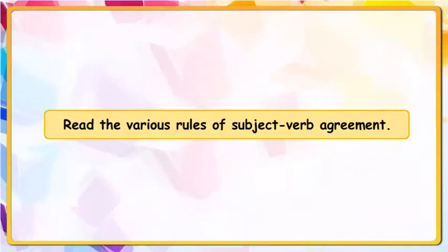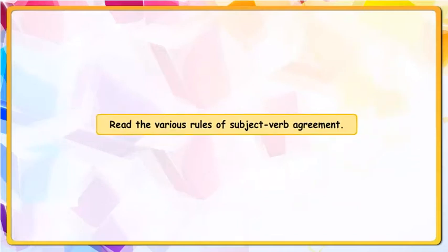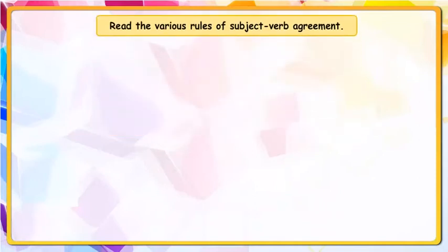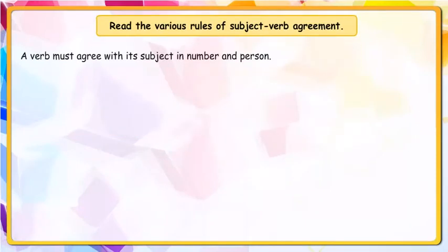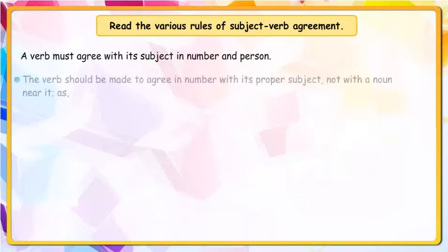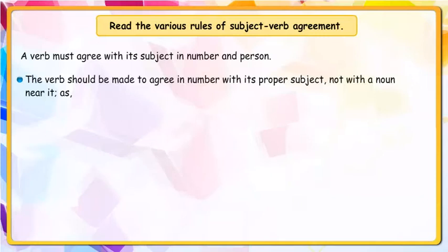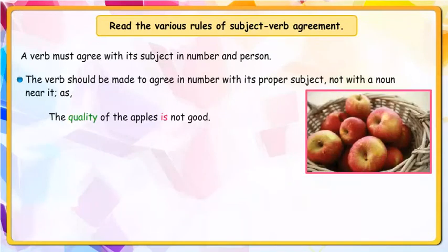Chapter 19: Agreement of the Verb with the Subject. Read the various rules of Subject-Verb Agreement. A verb must agree with its subject in number and person. The verb should be made to agree in number with its proper subject, not with a noun near it. For example: 'The quality of the apples is not good' is correct, while 'The quality of the apples are not good' is incorrect.